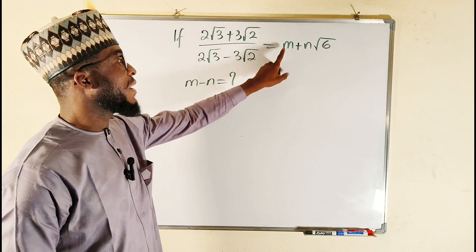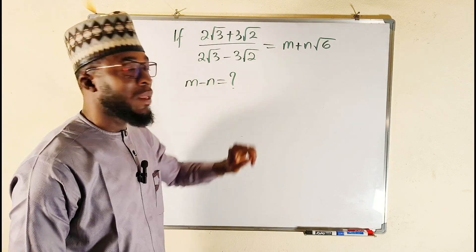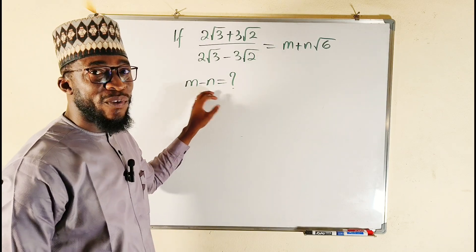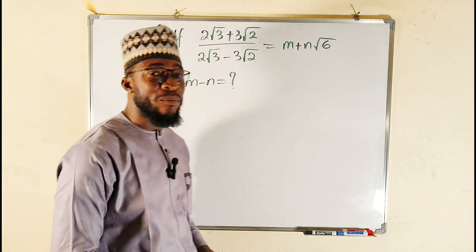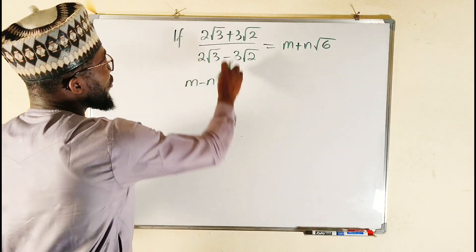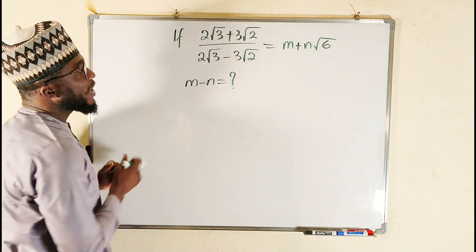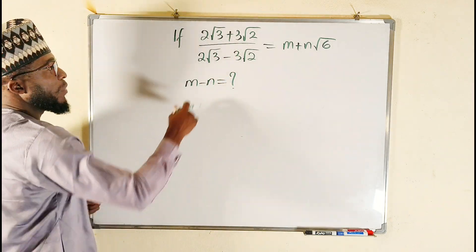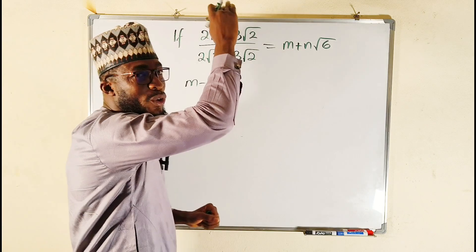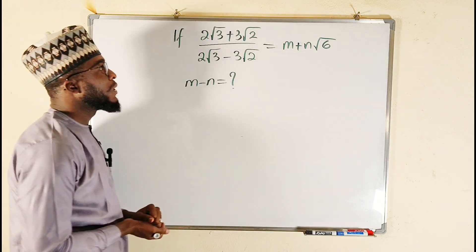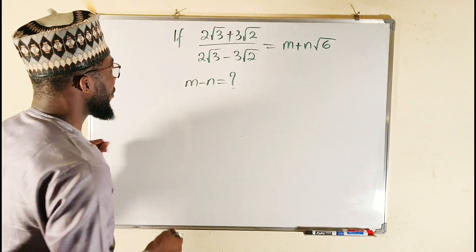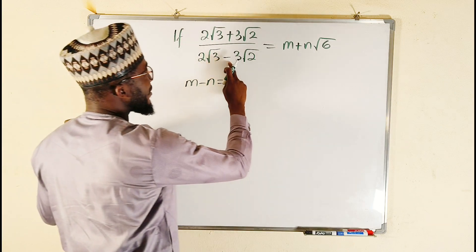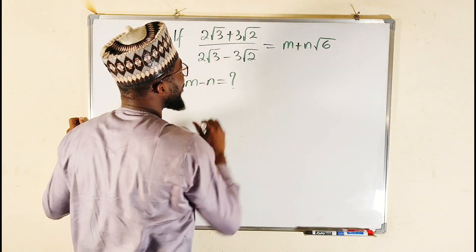We have to find m and n before we plug them in to find the value of m minus n. What we are going to do is rationalize the denominator by multiplying the top and the bottom by the conjugate of the denominator. The conjugate of the denominator is exactly our numerator.